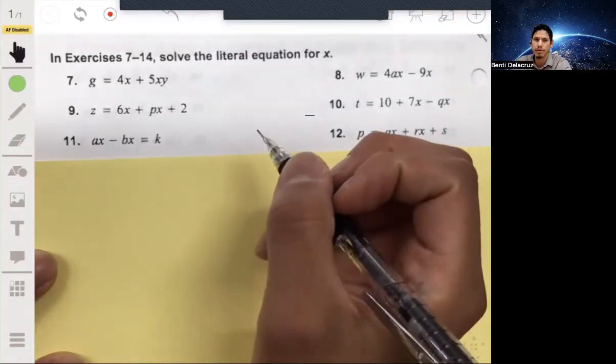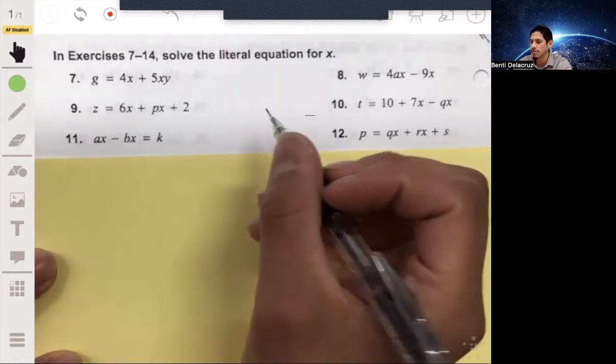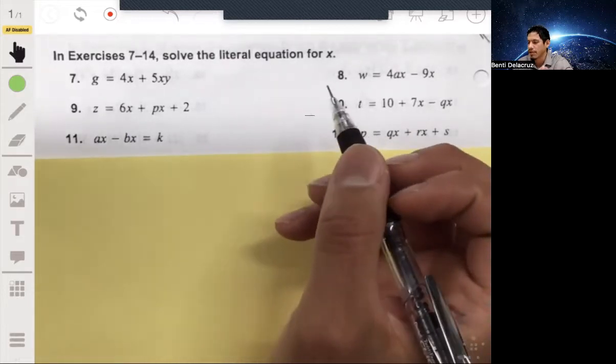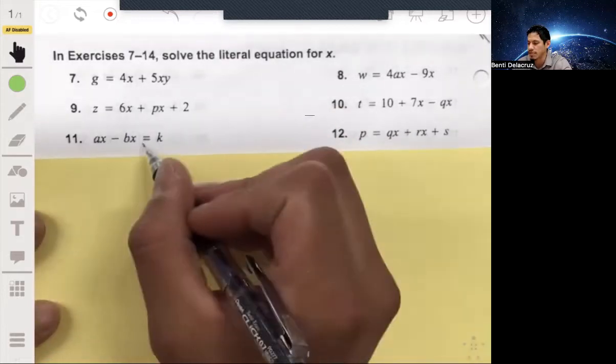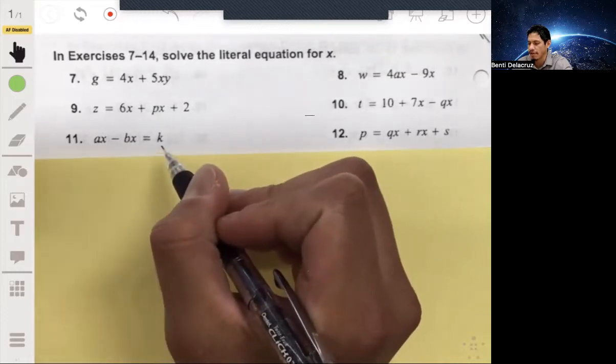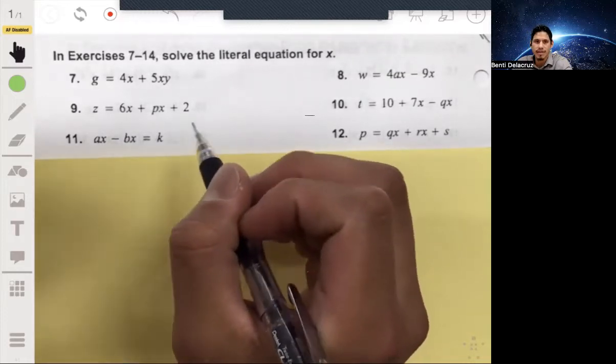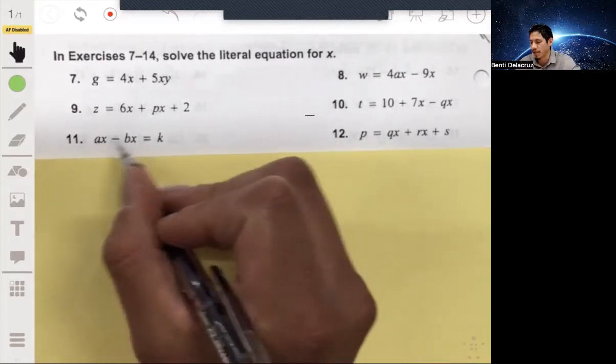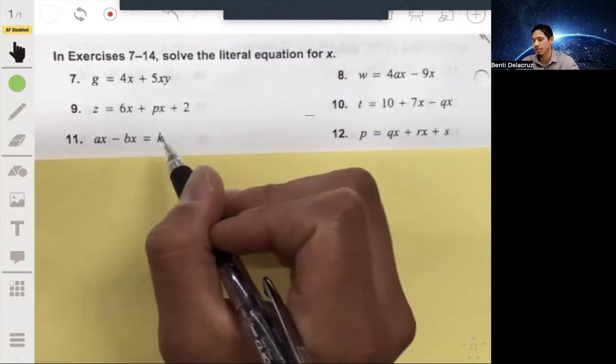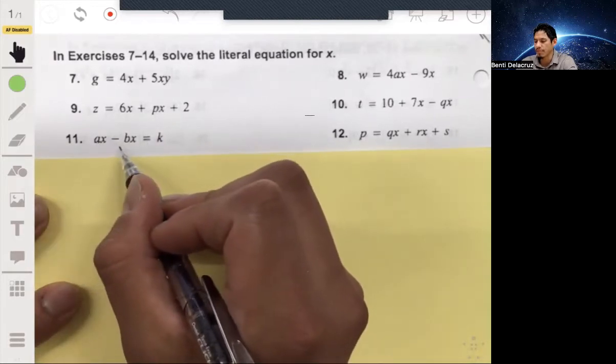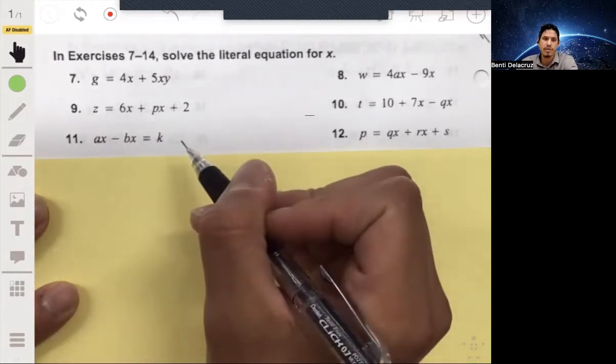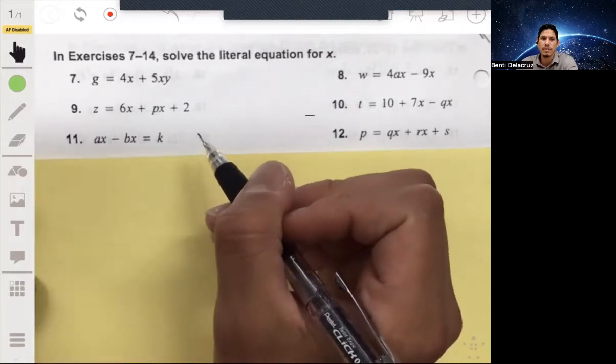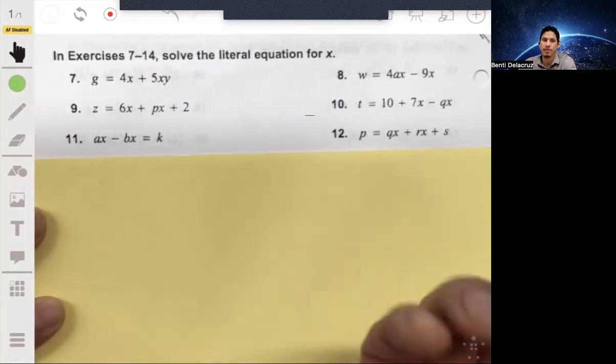Alright, so we're going to do some more practice for literal equations. Literal equations are just basically equations or formulas, so you're going to see lots of variables in literal equations. But don't let that scare you, because students tend to see a lot of variables and like no numbers. Just remember that the variables represent numbers, so you can still perform the same operations that you normally could when you're solving equations.